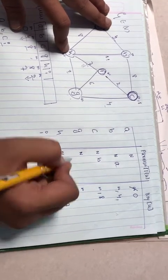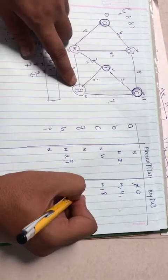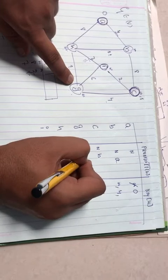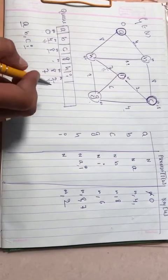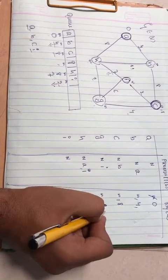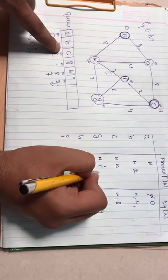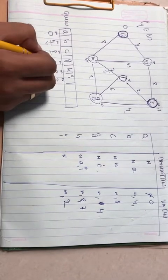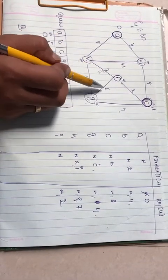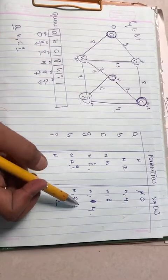h's parent becomes i. Now i to g: g is having the vertex value 6, but when we extract c outside, g already has the vertex value 4 and its parent becomes c. So g's value is already 4. Going from i to g, the vertex value is 6, and 6 is not less than 4, due to that reason we will not update g here.